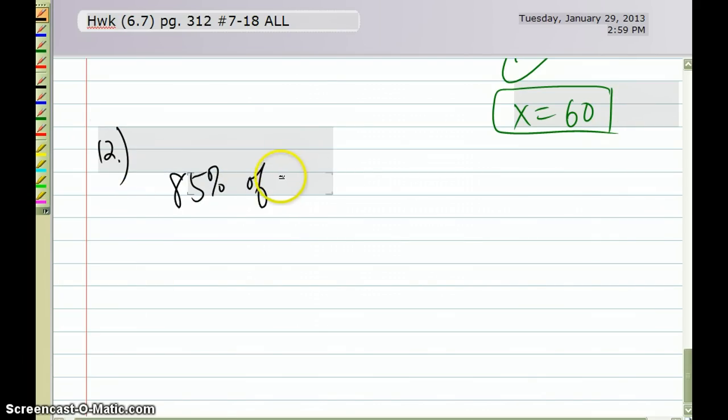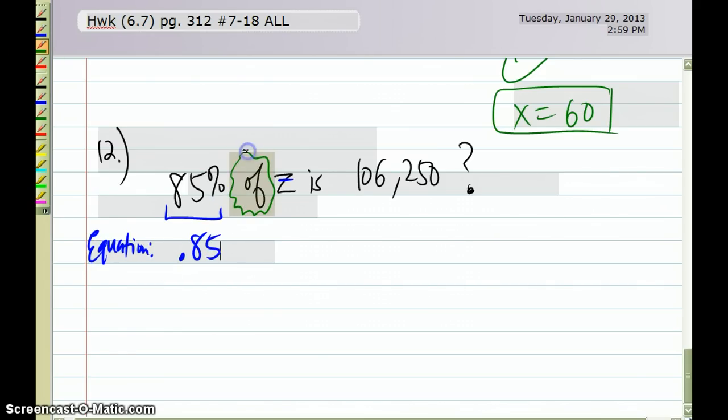85% of z is 106,250. Oh my goodness, we almost feel like we'd want a calculator, huh? But no, Ms. Zeus has no calculator. Practice those numbers. I'm going to start with 85%, I'm writing an equation. 85%, that decimal is 0.85, 'of' represents what? Multiplication. So I'm going to multiply that with z. And then my 'is' is going to be my equal sign, and 106,250. I keep saying it wrong.